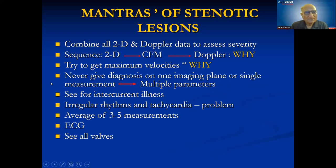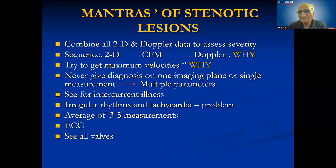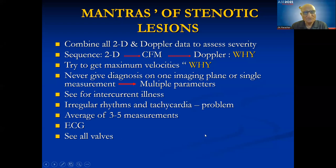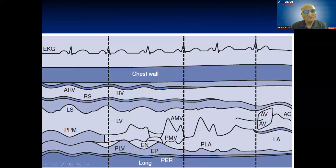Always check for intercurrent illnesses because they affect your Doppler findings — conditions like anemia, hypertension, and thyroid disorders. If a patient comes with 103 fever or severe anemia, refuse the echo and repeat it when these conditions are corrected. Always have an ECG and scan all walls. Average about three beats for sinus rhythm and five for atrial fibrillation.